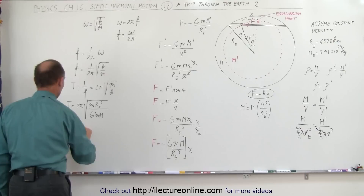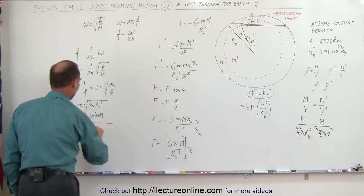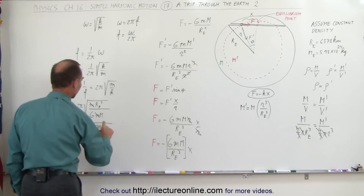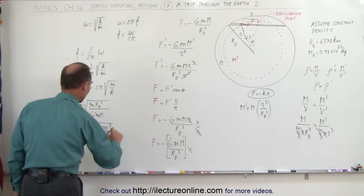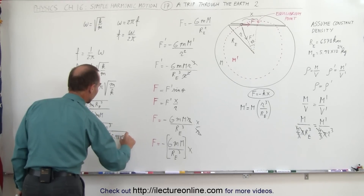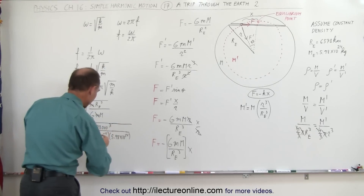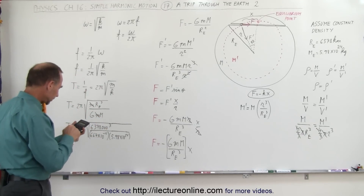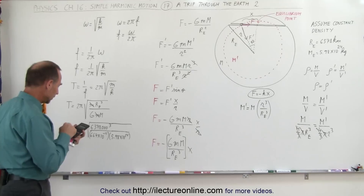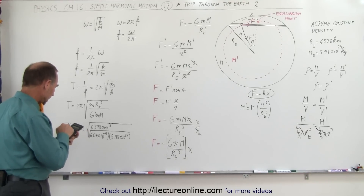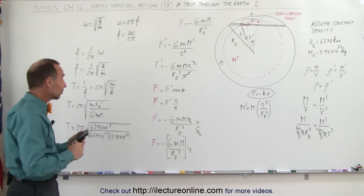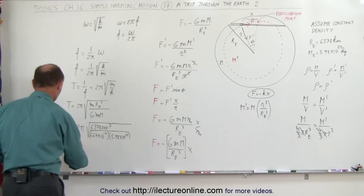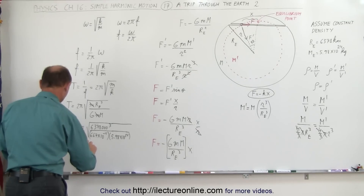The period equals 2 pi times the square root of the radius of the earth, 6,378,000 meters cubed, divided by G — which is 6.67 times 10 to the minus 11 — multiplied by the mass of the earth, 5.98 times 10 to the 24th. Computing: cube 6,378,000, divide by 6.67e-11, divide by 5.98e24, take the square root, times 2, times pi. The result is the exact same as in the previous video: the period equals 5,067 seconds.